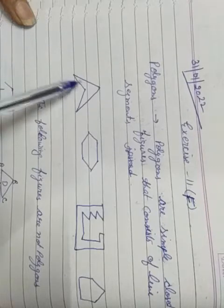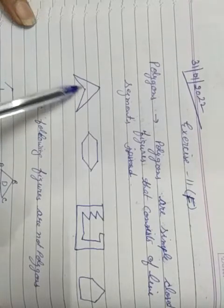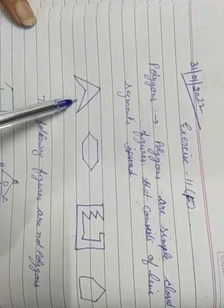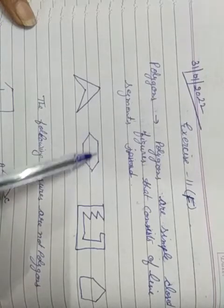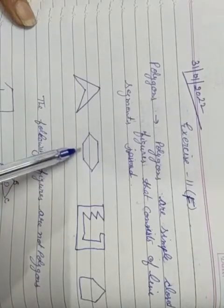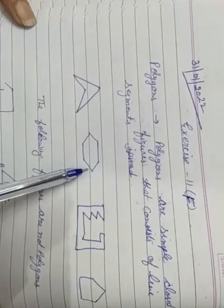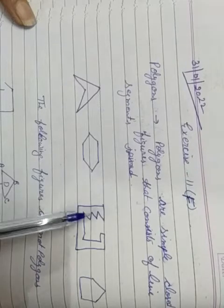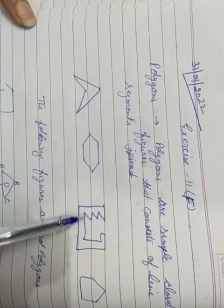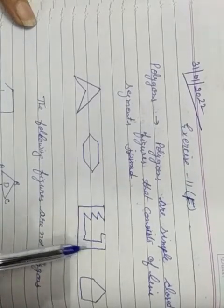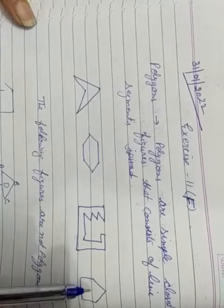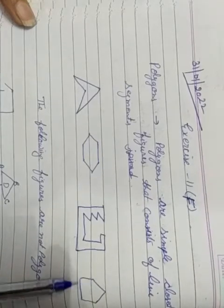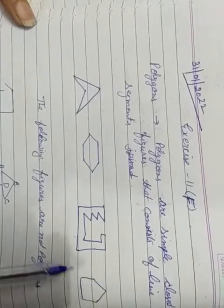This figure is made by four line segments, so it is a polygon. This one is also made by line segments and is closed, so it is also a polygon. This one is made by line segments and it is closed, so it is called a polygon.